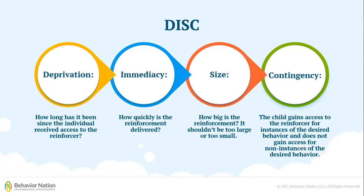Next, immediacy simply refers to the time between when the child engages in the behavior that you want to see and when you deliver the reinforcement. You want to deliver the reinforcement as quickly as you can following the behavior you have selected to increase. Next, size — you can consider this almost like Goldilocks and the three bears: one was too big, one was too small, and one was just right. Your reinforcement shouldn't be so big that your child engages in challenging behaviors to access it, or so small that your child isn't motivated to earn it. Finally, contingency means that your child gains access to the reinforcement for engaging in the behavior you want to see and does not gain access when they are engaging in other behaviors. Consistently provide reinforcement for the behavior you want, and do not provide it for other behaviors.